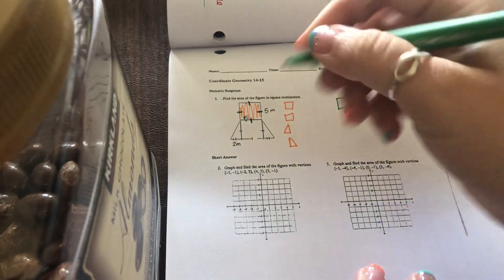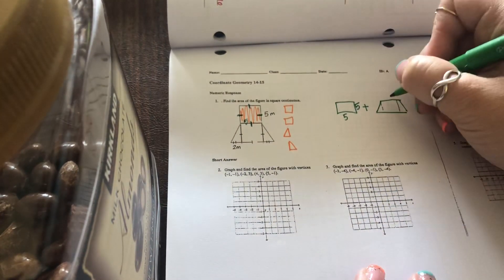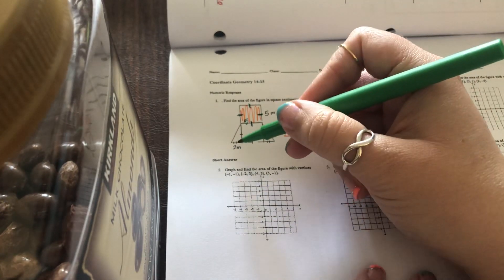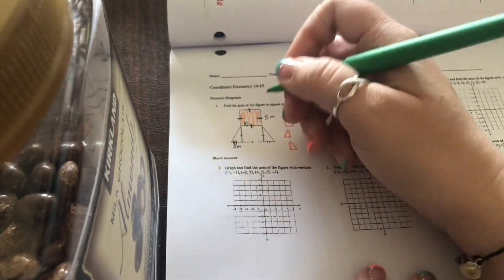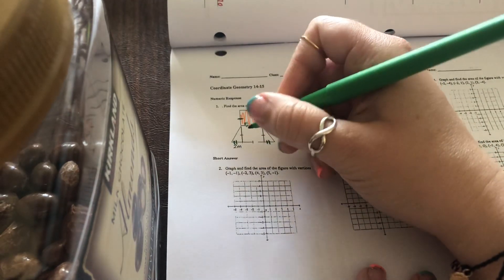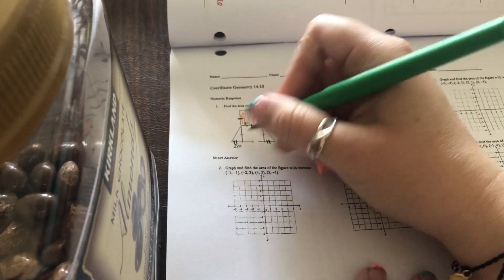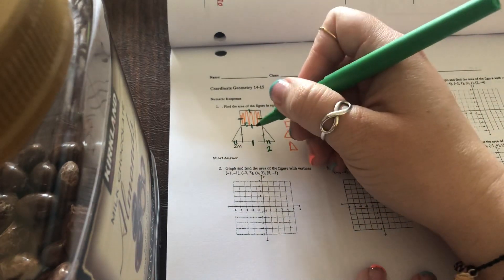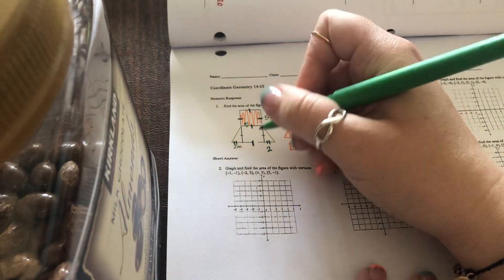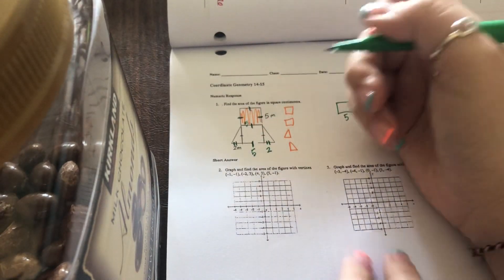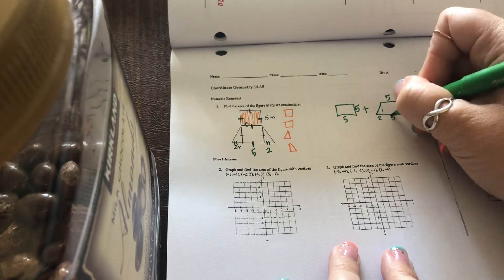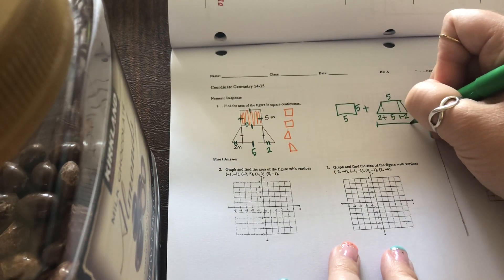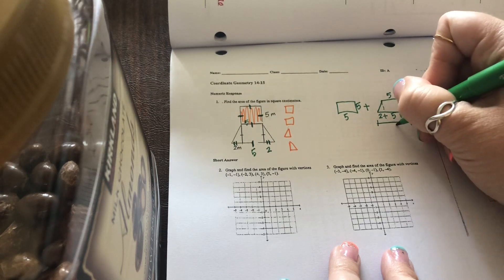So right here, this measurement is five, so that's one of your bases. And then your bottom base, they gave me this was two. And notice how this has two tick marks and over here is two tick marks, which means these measurements match. So if this is two, that's two as well. And then this has one tick mark, which means it matches with all the one tick marks with a measurement of five. So that bottom is two, five, and two. So if you add all those together, well, two plus two is four and four plus five is nine.